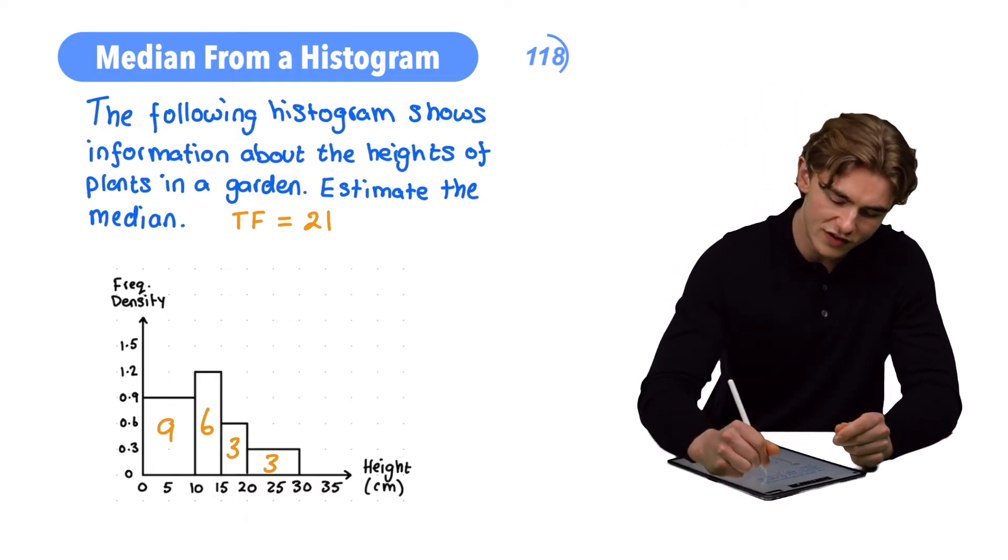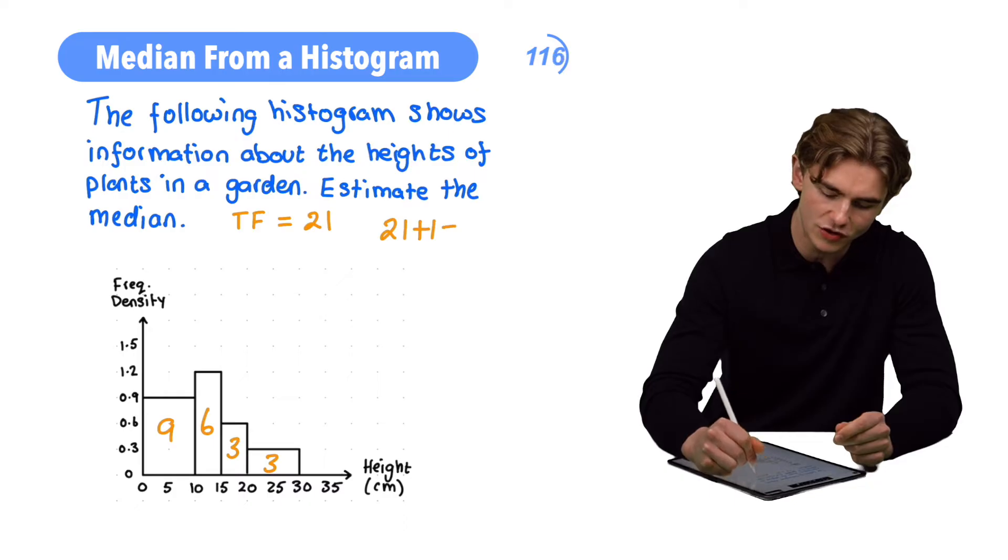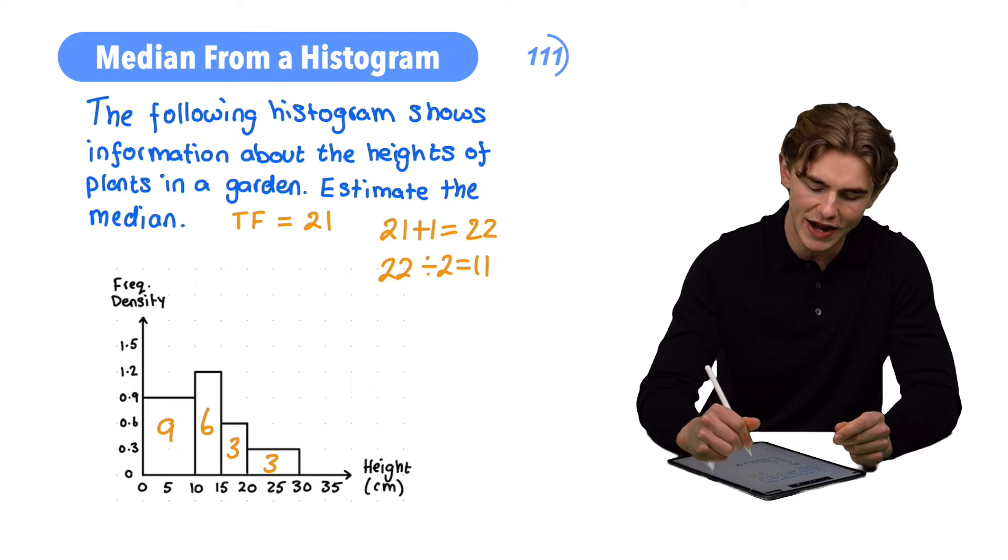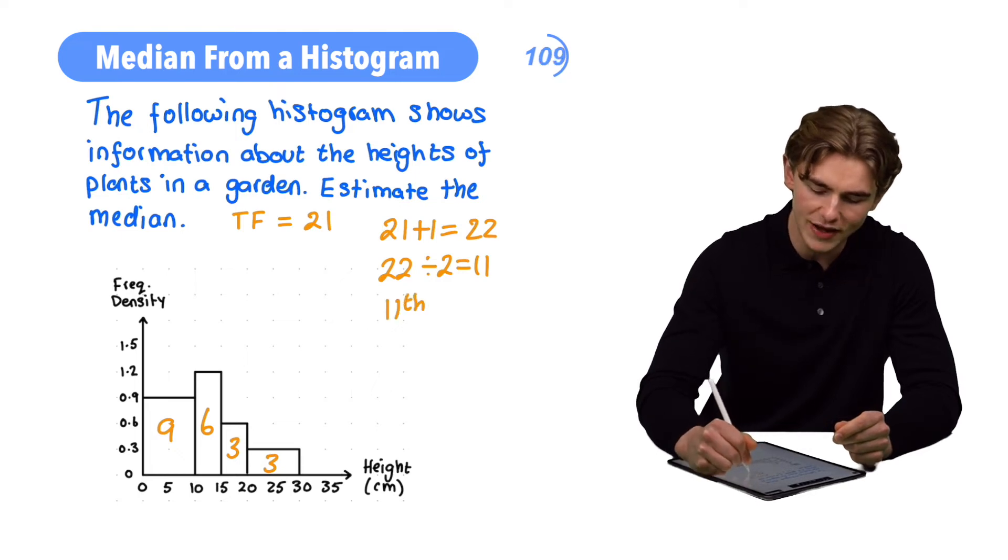Let's get it done then. We're going to do 21 plus 1, that's going to be 22. Then we're going to do 22 divided by 2 and that's going to give us 11. So now we know that our 11th value is going to be our median.